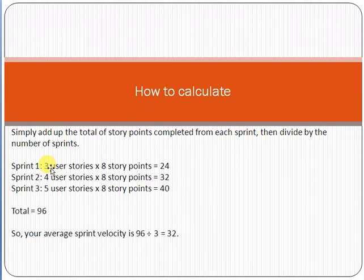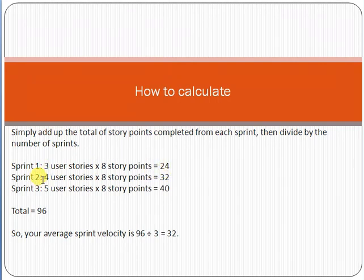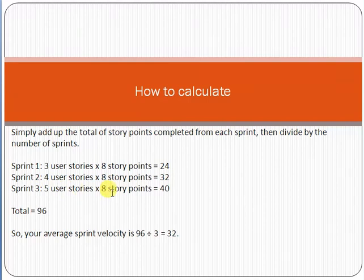For example: in Sprint 1, the Scrum team completed three user stories with eight points each, giving 24 story points. In Sprint 2, four user stories were completed with eight points each, giving 32 story points. In Sprint 3, five user stories were completed with eight points each, giving 40 story points.